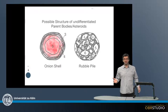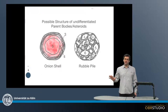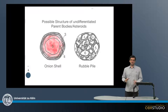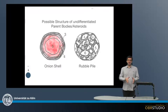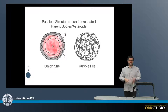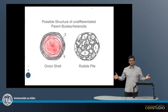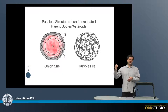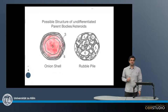Differentiated meteorite parent bodies, or asteroids, have been more or less completely molten, which means a metallic and a silicate phase separated. And if the body was very large, then it likely formed a core, a mantle, and maybe even a crust.